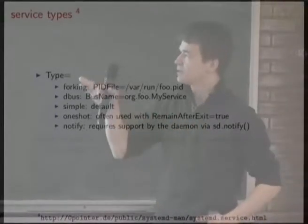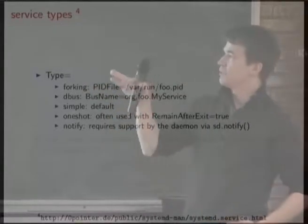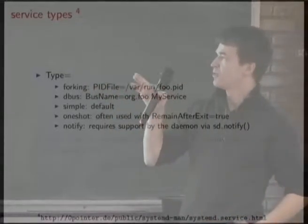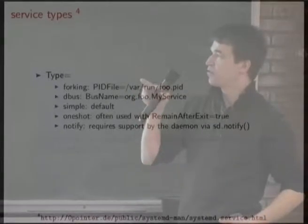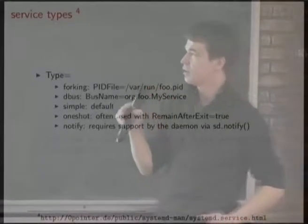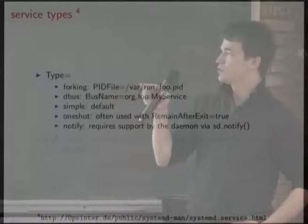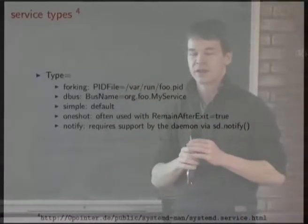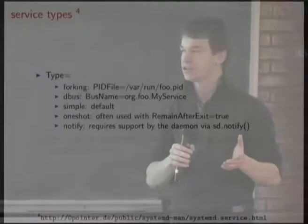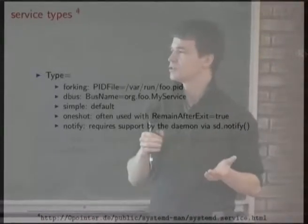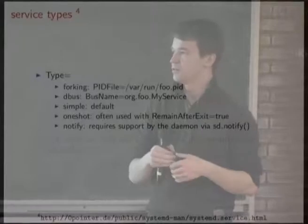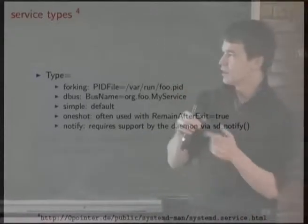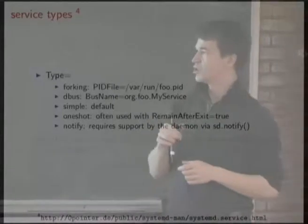There are mainly five important service types. The important ones are forking, dbus, and maybe simple. One-shot is usually used if you have a script that just executes something — like x11-common, which just sets up a few files but doesn't start any long-running service. That's the one you want for one-shot.